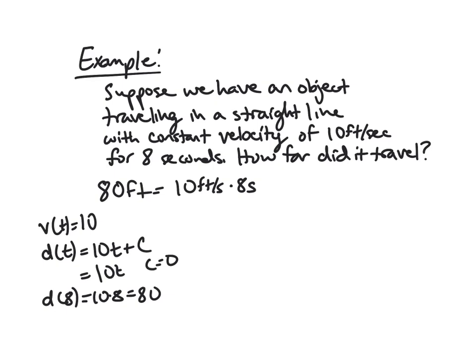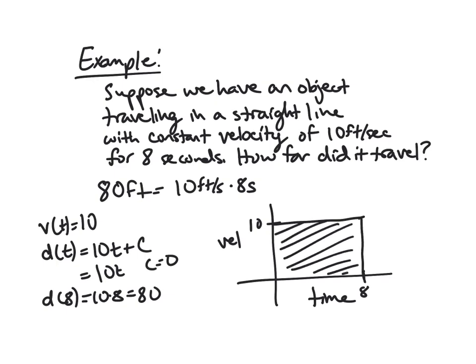I want to show that this can also be viewed geometrically. So if we graph this, and we've got time down here and velocity over here, I've got this constant velocity at 10, and I'm going until 8 seconds. 80 is exactly the area of this rectangle, 8 times 10 for length times height. So these are two different ways, a geometric one and an anti-derivative one, to view the same concept.